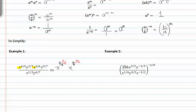Moving on to the y's, we have a matching base of y, so let's go ahead and write those next to each other. They already have a common denominator of seven. The first y is two-sevenths and the second y is three-sevenths. We can add those two fractional exponents together because their denominators already match.